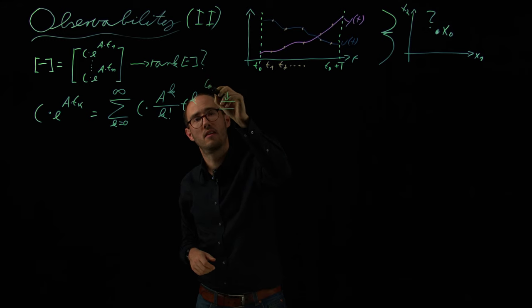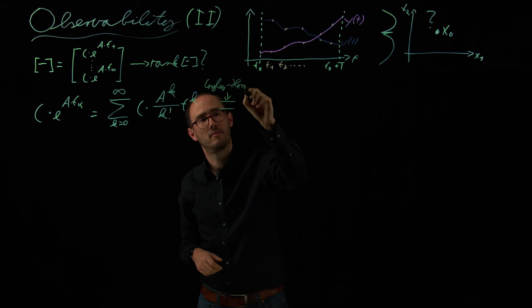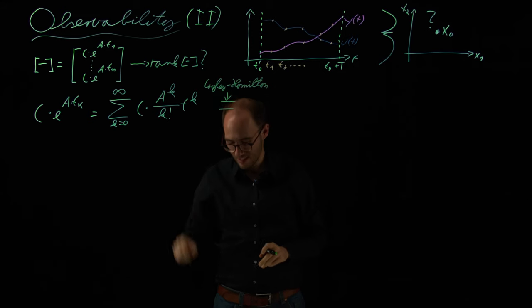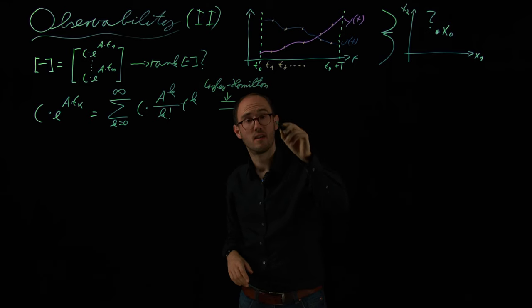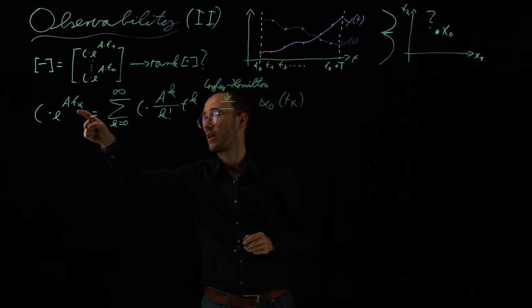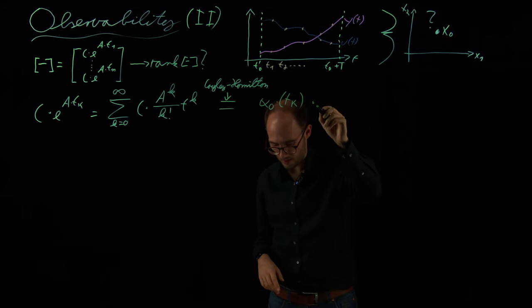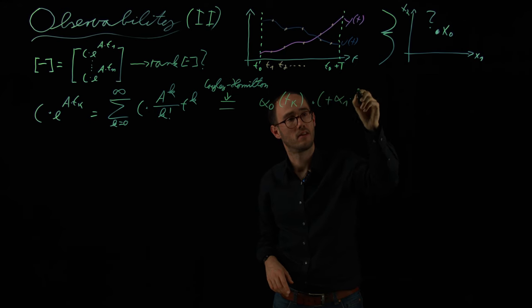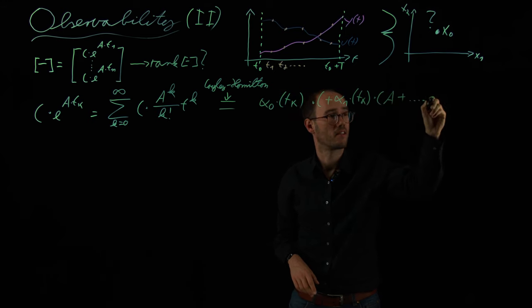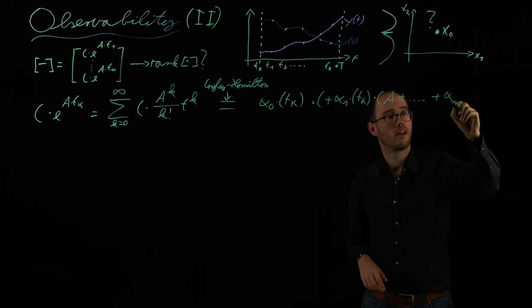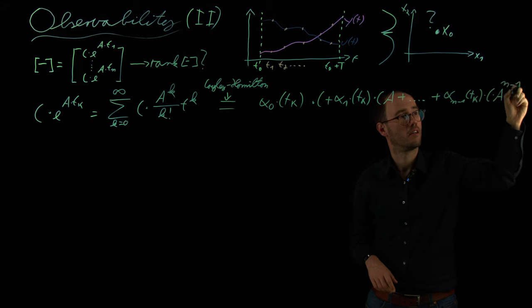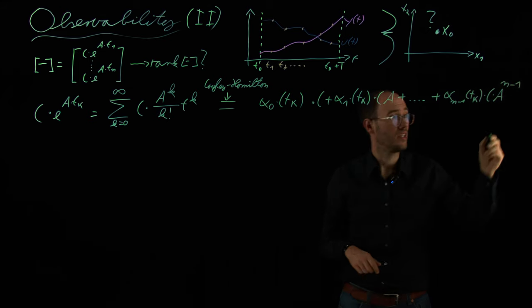which is a theorem from Cayley-Hamilton. The theorem of Cayley-Hamilton basically says that I can represent this infinite series by a finite series of coefficients times alpha 0, which are time dependent, in this case depending on this time tk, this measurement time, times C plus alpha 1 tk times CA plus, until alpha n minus 1 tk times CA to the power of n minus 1.